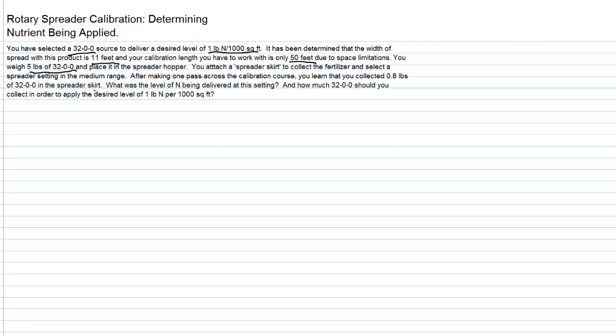We've collected 0.8 pounds of 32-0-0. That leads us to two questions: to determine what was the level of nitrogen being delivered at this current setting on the spreader, and then how much 32-0-0 should be collected in order to apply a desired level of one pound of nitrogen per thousand square feet.